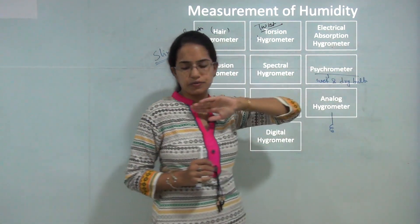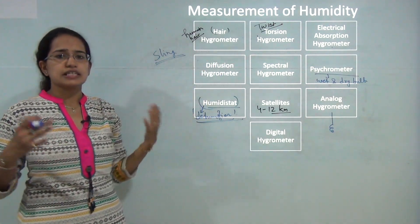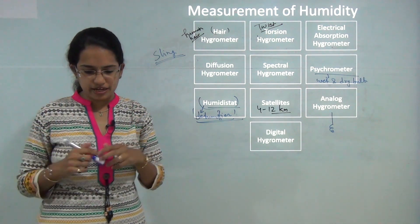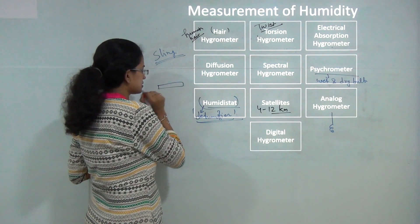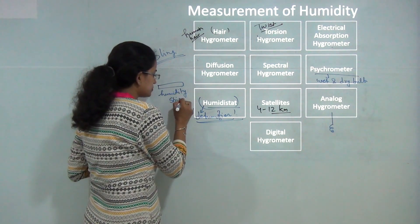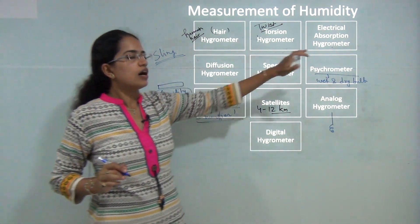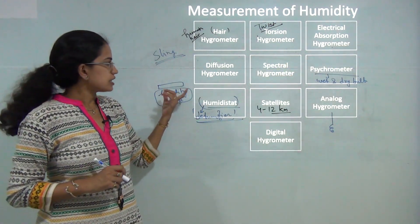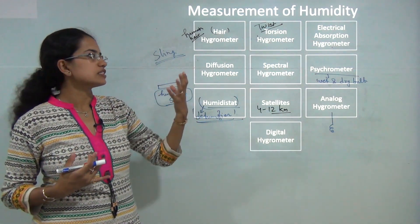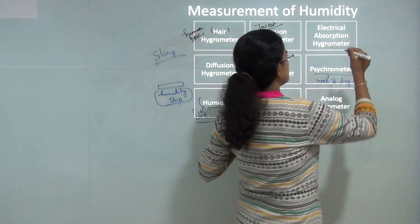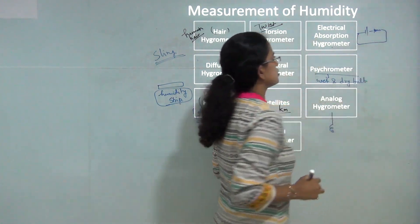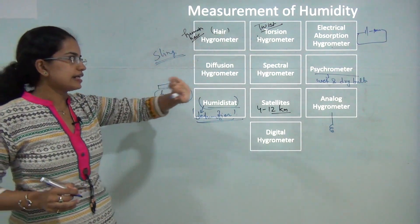The electrical absorption hygrometer detects changes in electrical polarity. Black carbon is dispersed on a plastic strip called a humidity strip, which absorbs moisture from the atmosphere. As moisture is absorbed, it causes changes in the resistance of the circuit, which is how the electrical absorption hygrometer works.